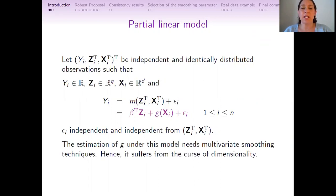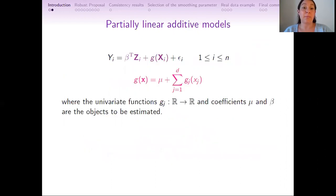But the estimation of ξ under this model needs multivariate smoothing techniques, so it suffers from the curse of dimensionality, which is associated to the fact that as dimension increases, neighborhoods of a point become more sparse. In order to solve this problem, partially linear additive models were proposed. Under these models, the multivariate function ξ is assumed to be a constant μ plus a sum of univariate functions g_j(x_j). Then the objects to be estimated are the univariate functions g_j and the coefficients μ and vector β.